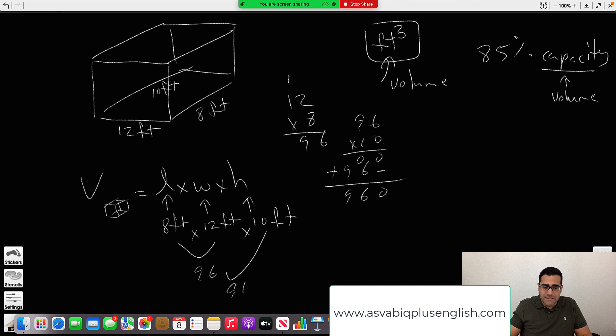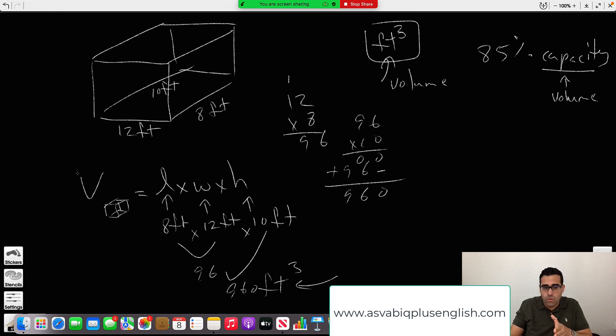You haven't finished because this would be 100% of the capacity—when it's completely full. 960 cubic feet is the total volume. The total volume is the total capacity it has, but you don't want the total capacity.